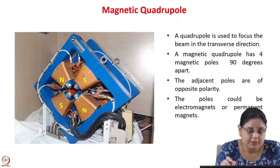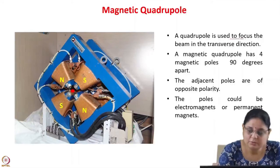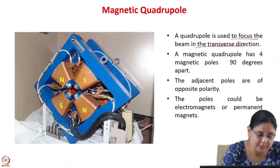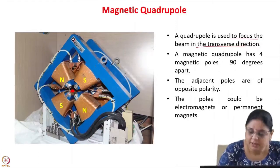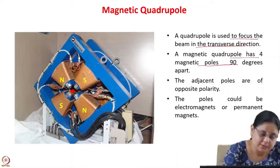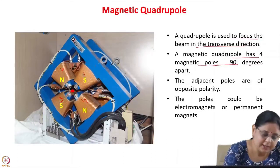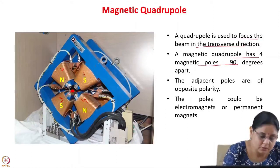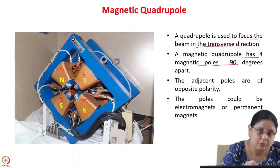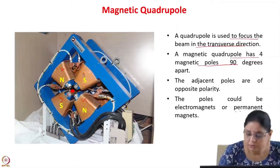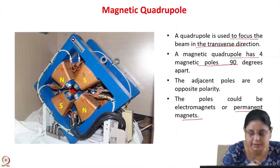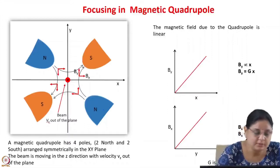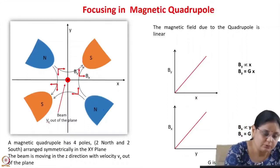Let us see a magnetic quadrupole first. This picture shows a magnetic quadrupole, which is used to focus the beam in the transverse direction. The red thing you can see is the beam—it passes through this region and experiences the force due to the magnetic field of this quadrupole. The magnetic quadrupole has 4 magnetic poles 90 degrees apart, and the adjacent poles are of opposite polarity—north, south, north, south. These poles could either be electromagnets, where coils are wound around them and the direction of current flow determines the polarity, or they could be permanent magnets.